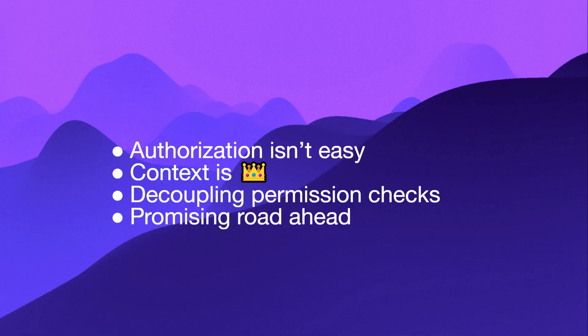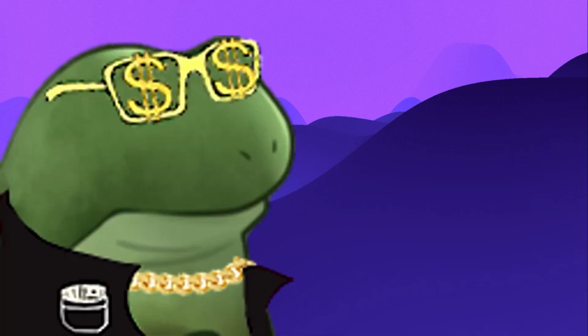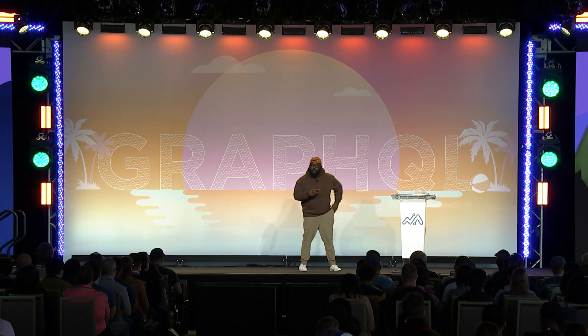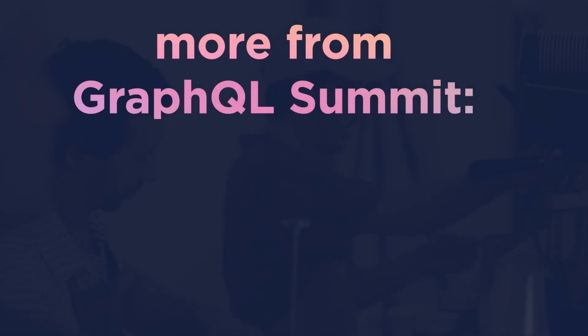So to recap: authorization ain't easy, and context is really one of the biggest factors contributing to that difficulty. Being able to decouple and represent that context within our permission models really helps tackle a lot of the challenges we've been facing for authorization in our services. There's a promising road ahead, and hopefully you can feel a lot less like the sad frog and more like cash money frogs. One more time — sac passe! Awesome, thank you.